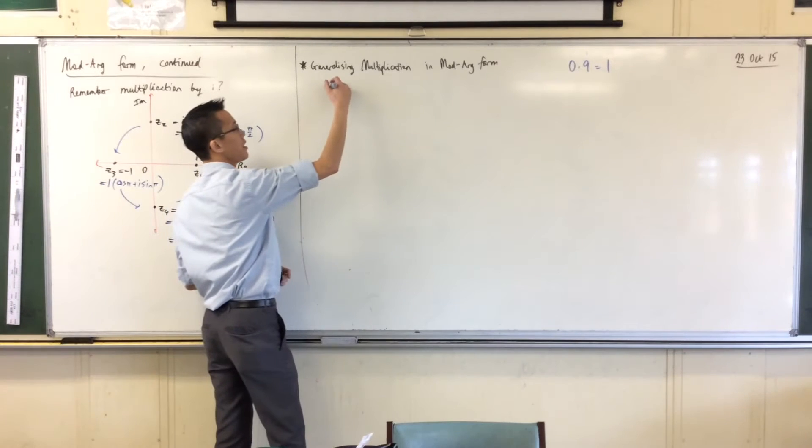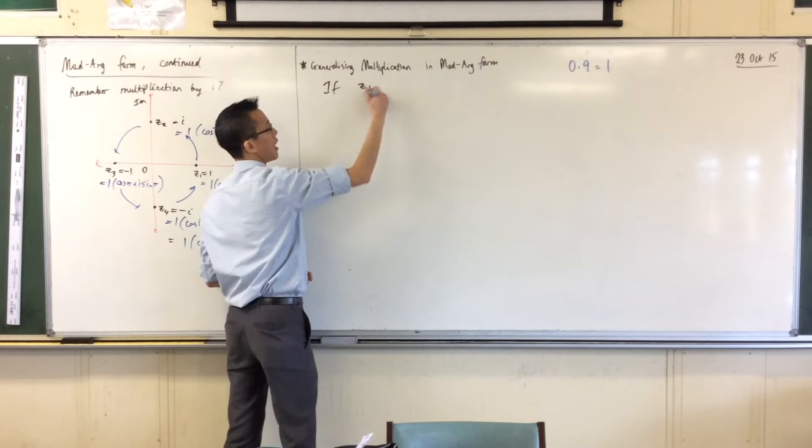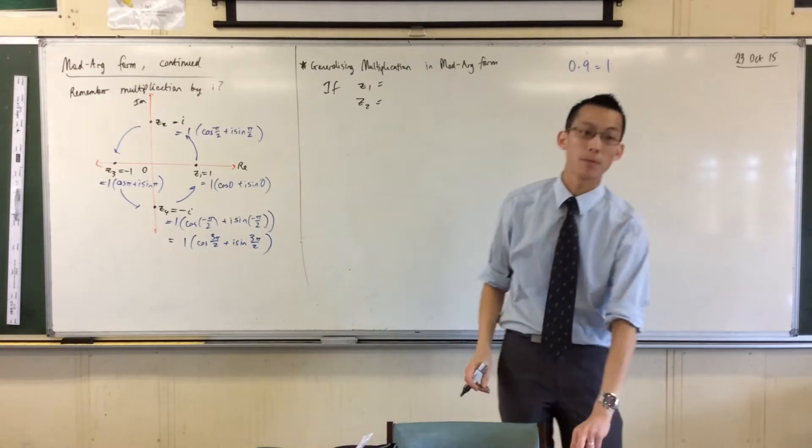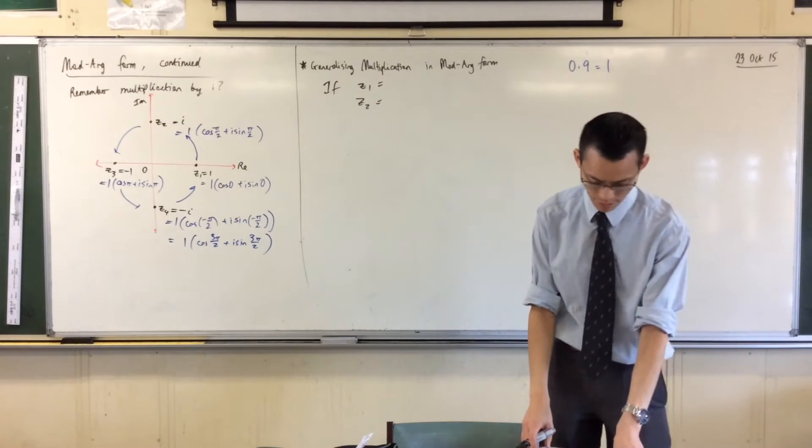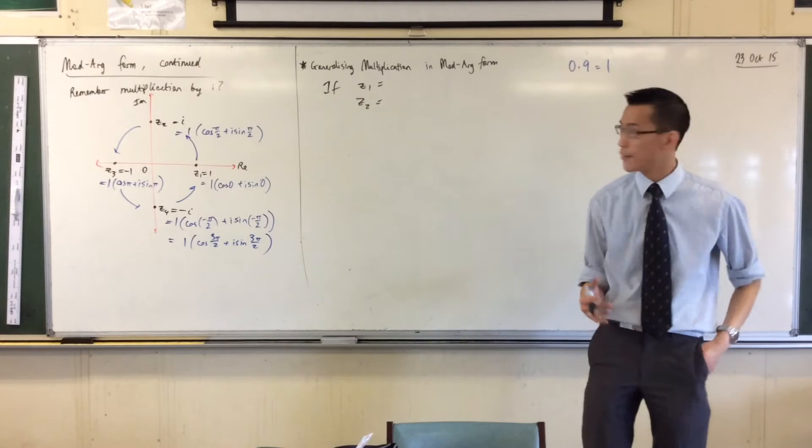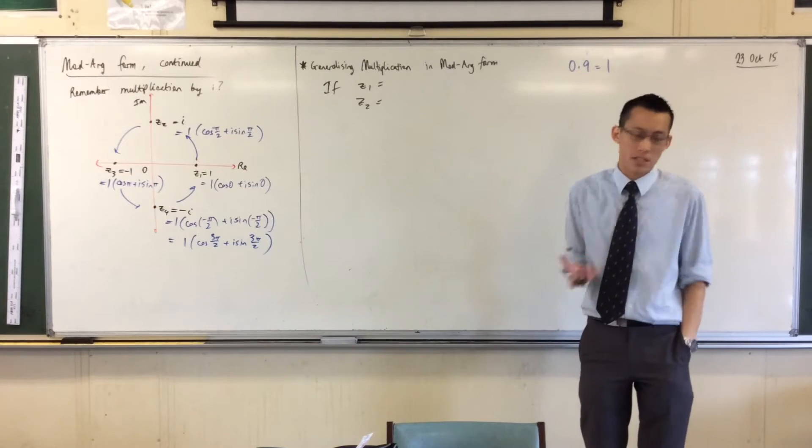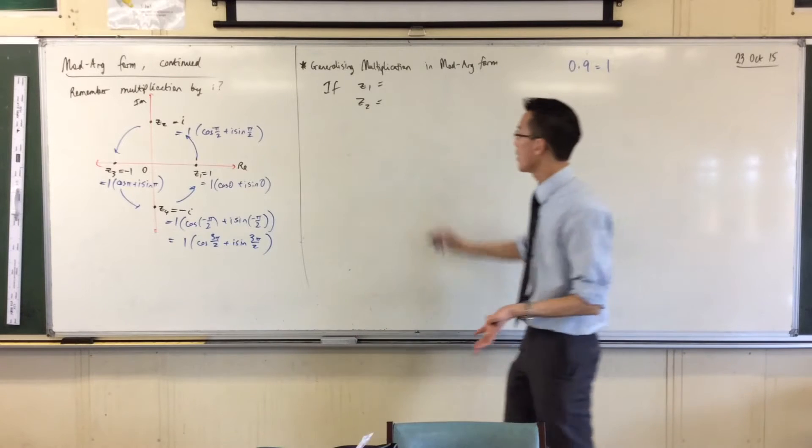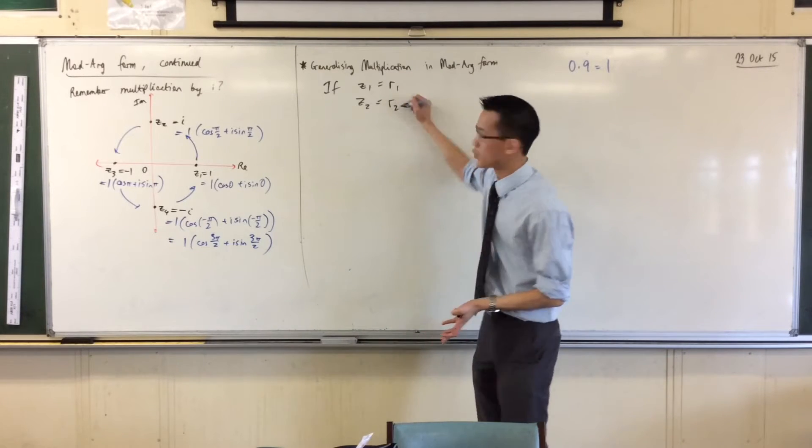Well, if I've got two complex numbers, any complex numbers, they're going to have different moduli and different arguments, I assume, if they're different numbers. So let's call the moduli R1 and R2.